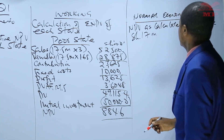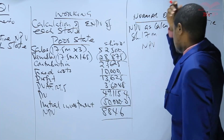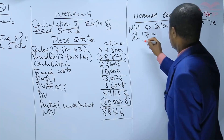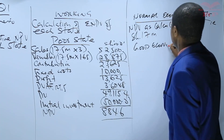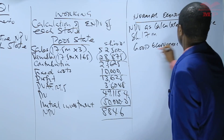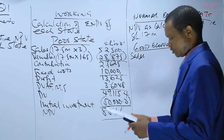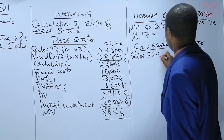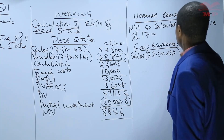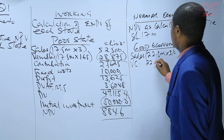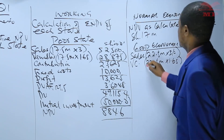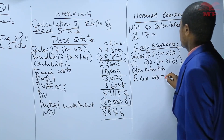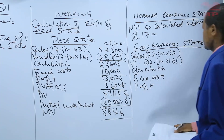We move on to calculate the NPV for the good economic state. For the good state, sales are 22.5 million units times 3 shillings. The variable cost is 22.5 million times 1.65 shillings. This gives us the contribution, from which we deduct the fixed cost of 10 million to get the profit.